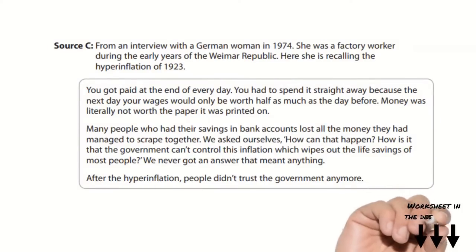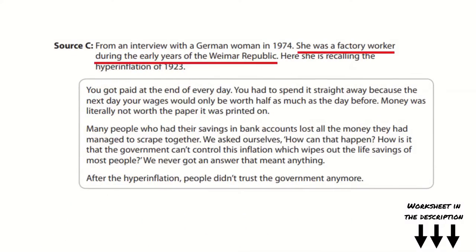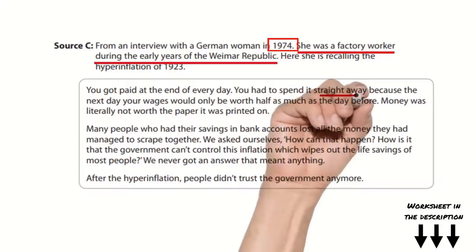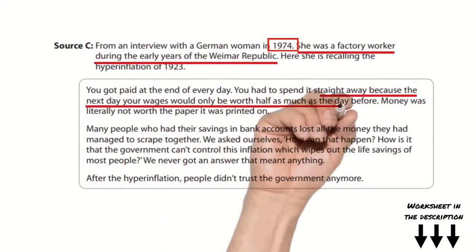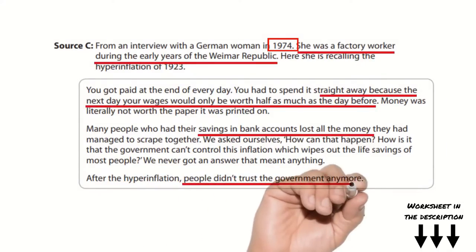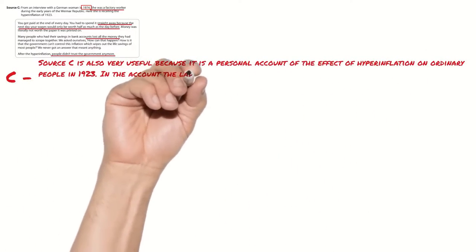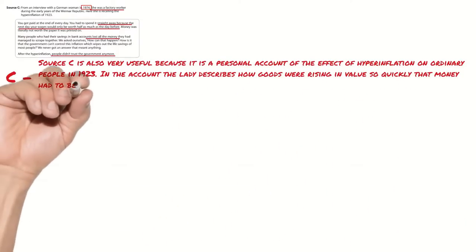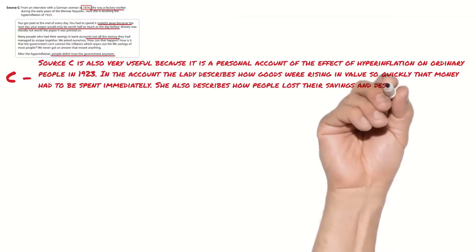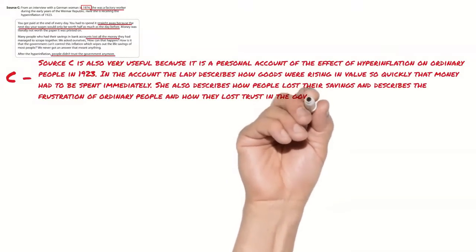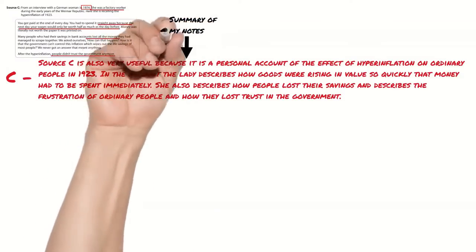So let's have a look at source C so we can practice this skill. I've included my model answer and a practice worksheet for you in the description so you can follow along and again I'm going to briefly annotate the source to give me some reminders. The caption is again useful to us because it tells us that this is the account of someone who lived in Germany during hyperinflation and she is giving an interview in 1974 which is 50 years after hyperinflation. In the source she gives us three clear points. She talks about the rapid rise in the cost of goods, the effect on people with savings and how this affected people's trust in the government. I'm going to jump straight in with my content. Source C is also very useful because it is the personal account of the effect of hyperinflation on ordinary people in 1923. In the account the lady describes how goods were rising in value so quickly that money had to be spent immediately. She also describes how people lost their savings and describes the frustrations of ordinary people and how they lost their trust in the government. Here I'm just summarising what the source says and I'm going to link it to my own knowledge now.